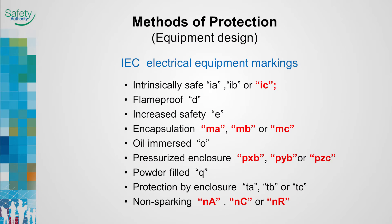New additional methods of protection are shown in red. Equipment may be marked with methods of protection which indicate the specific type or types of design incorporated into a device or equipment instead of an EPL. When this is the case, the user must consult the code to determine the suitability of the equipment design for the intended application within the explosive gas or dust atmospheres.